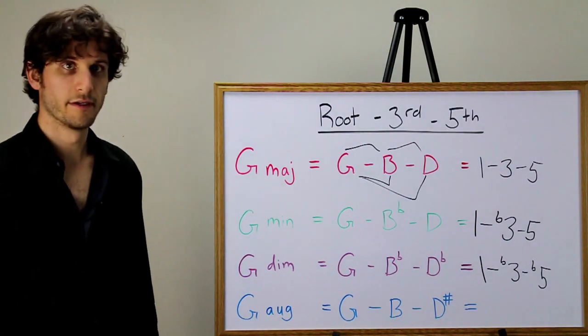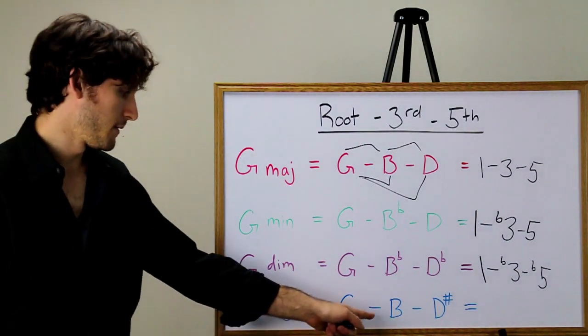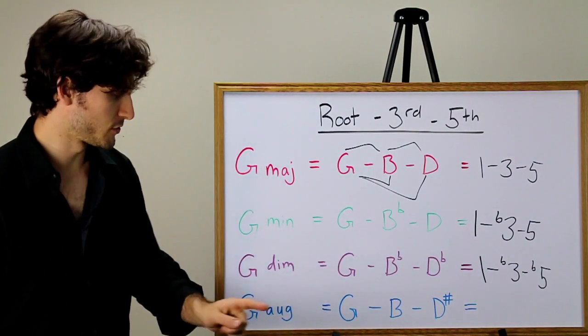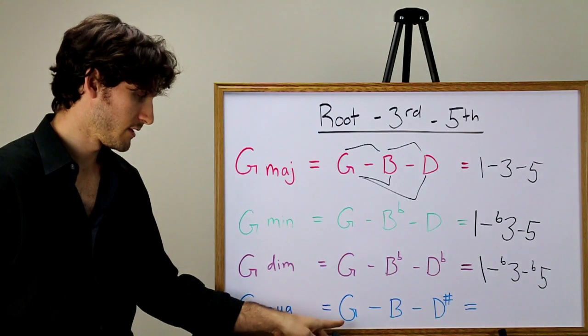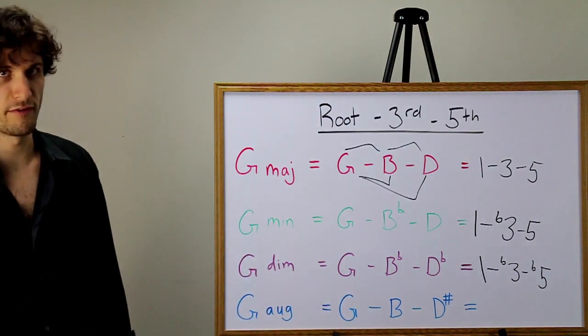The augmented chord has G, B, and D sharp. G is the root, B is a major third away from G, and D sharp is an augmented fifth away from G.